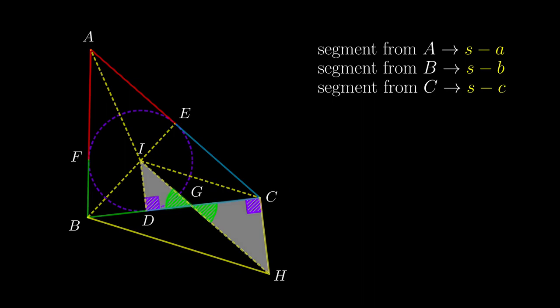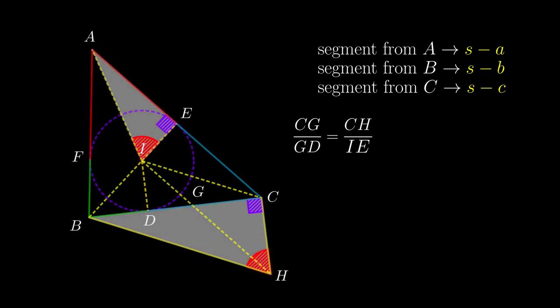From this pair of similar triangles, we have this proportionality of sides. Now since both ID and IE are the radius of the circle, they are of the same length, so we can replace ID by IE. Now we look at another pair of similar triangles. We have another proportion of sides. We can now replace BC by the symbol a, and from the results we obtained, we have AE to be s-a.